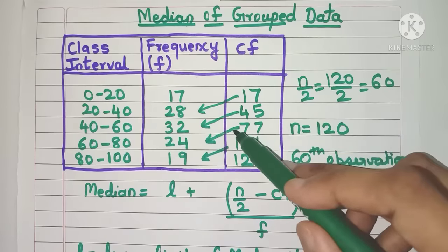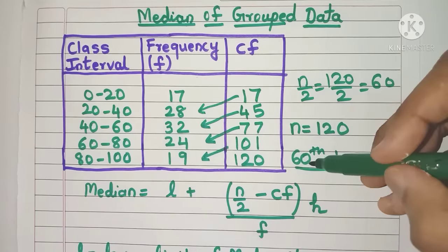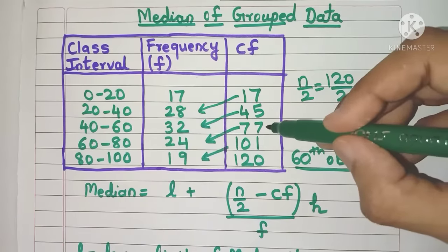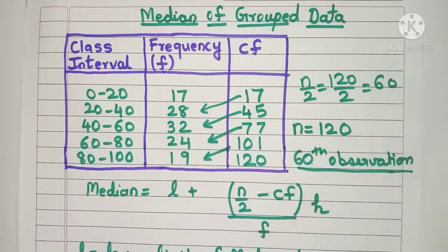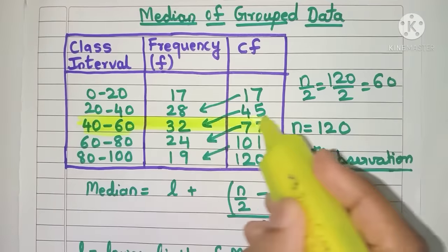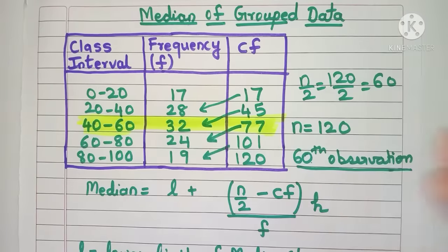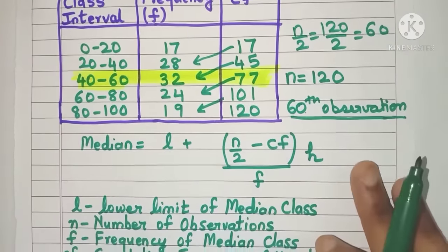In this class, you have observations 46 to 77. That means my 60th observation will definitely lie in this class. That means this is my median class. So I hope you understood how to find the median class. Let's highlight it.